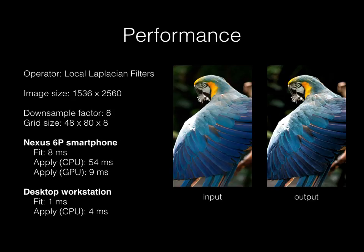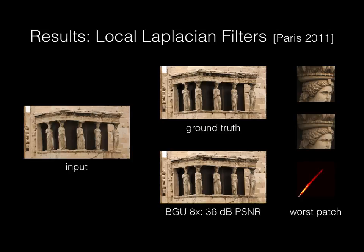Now let's look at some image quality results. We evaluated our technique on a variety of operators and a large collection of images. The first is local Laplacian filters, which is a high-quality but expensive operator for tone mapping and detail enhancement. Using bilateral guided upsampling, with 8x downsampling and therefore about a 64x speedup, we achieve a PSNR of 36 dB.